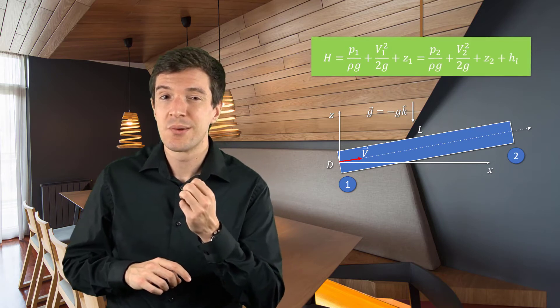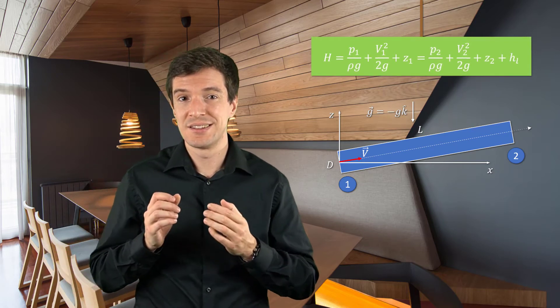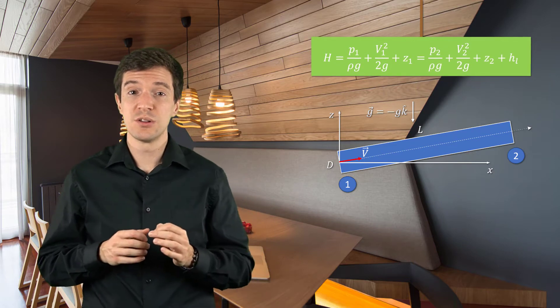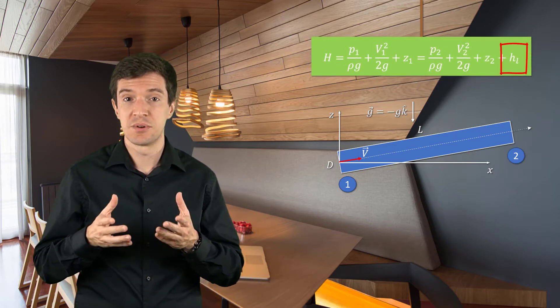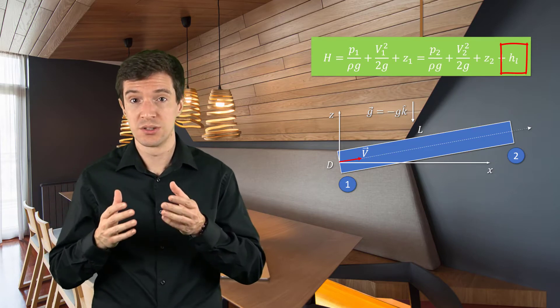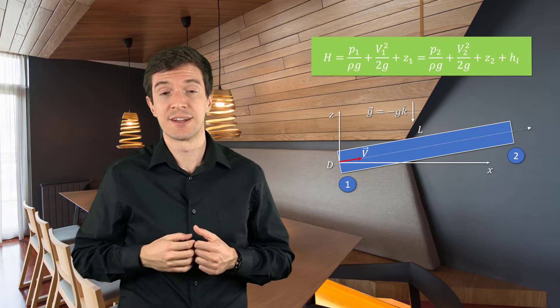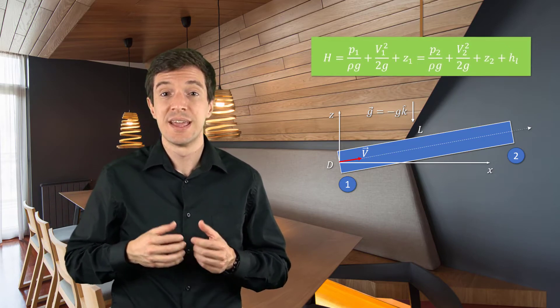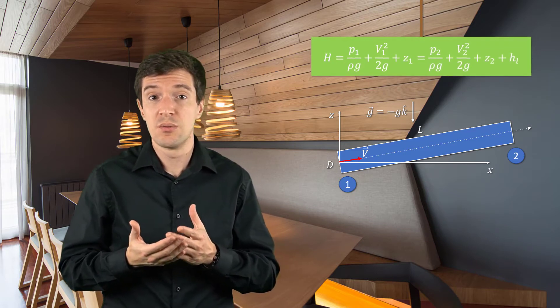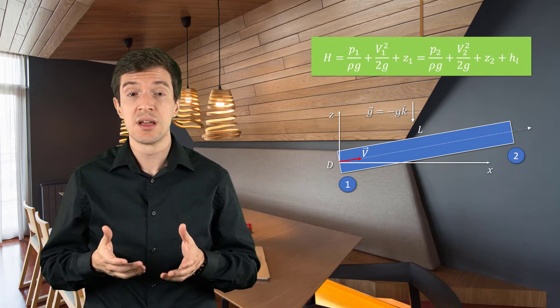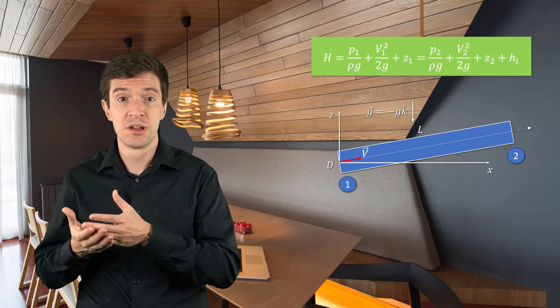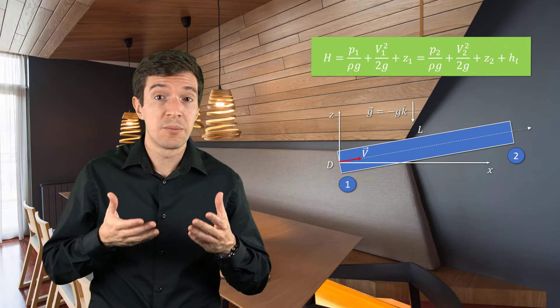But we can notice that in location 2, we have also an additional term HL, that represents the head loss due to the viscous effects. Indeed, as the flow moves through the pipe, there will be a certain HL loss generated by the interaction of the fluid with the pipe walls.